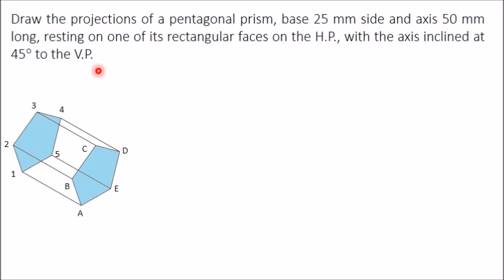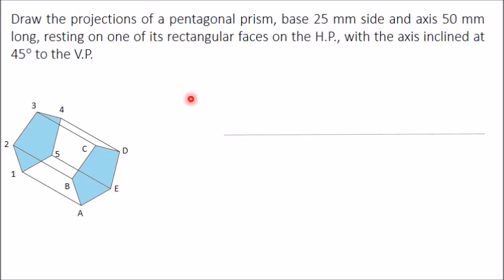When the axis is inclined to one of the reference planes, in the initial stage you should keep that axis perpendicular to the given plane. Here the axis is inclined at 45 degrees to the VP, so first keep the axis perpendicular to the VP. This gives a true shape of the base in the front view, so draw the front view first. Draw the XY line, then draw the front view showing the pentagonal shape, with the bottom side overlapping the XY line since the face is on the HP. Draw the pentagon using 108-degree angles and 25 mm sides.